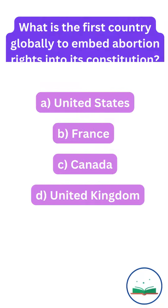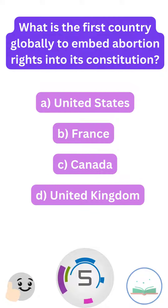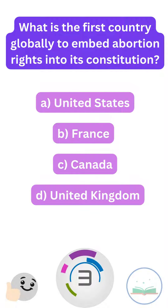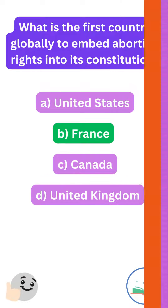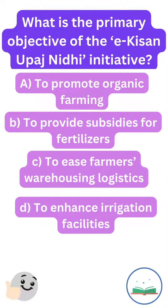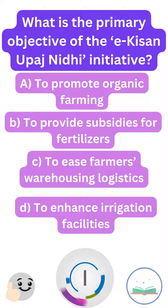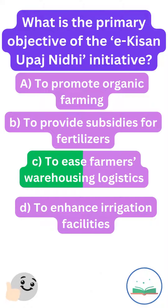What is the first country globally to embed abortion rights into its constitution? France. What is the primary objective of the Ekisan Upaj Nidhi initiative? To ease farmers' warehousing logistics.